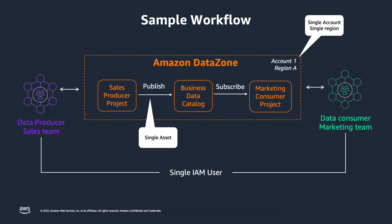Let's explore the sample workflow we will implement using DataZone. In this scenario, the marketing team is looking to access and analyze sales data. The sales team will make this data available for marketing using an existing table named CatalogSales in the Redshift serverless workgroup. To keep things simple, we will limit this implementation to a single AWS account, a single region, and a single IAM user, acting as both the data producer and the data consumer. We'll also limit our demo to a single data asset.